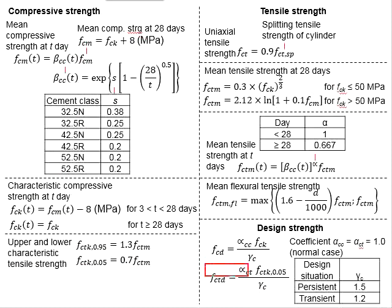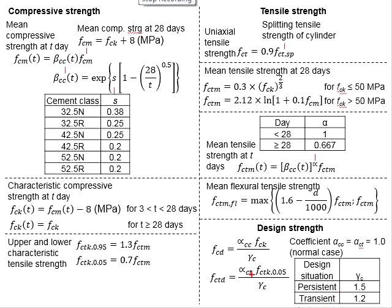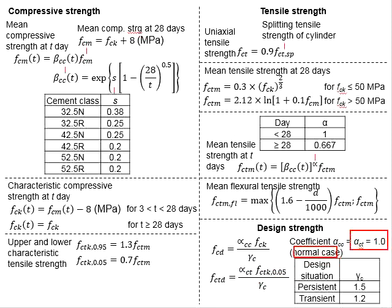As for the design tensile strength of concrete, it is essentially alpha_ct times FCTK 0.05, divided by the partial factor of safety of the concrete. For the normal case, alpha_ct equals 1.0, and for normal situations, gamma_c equals 1.5.